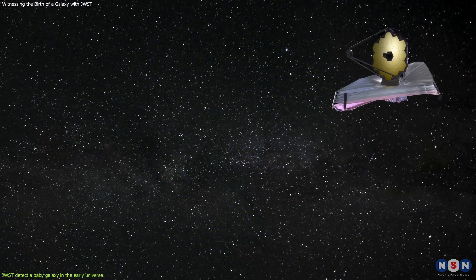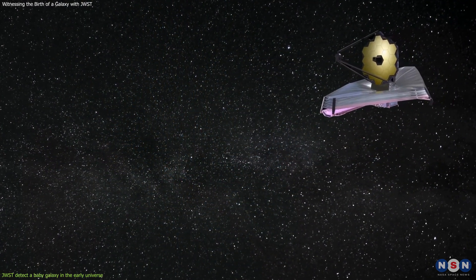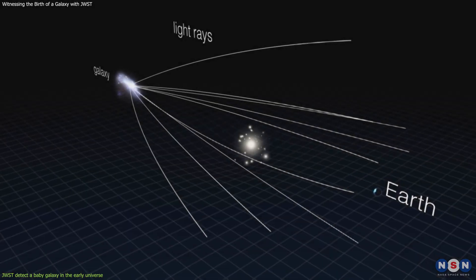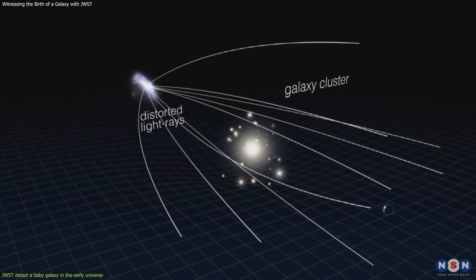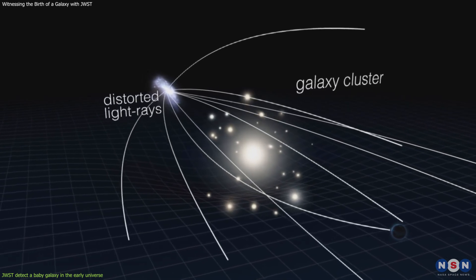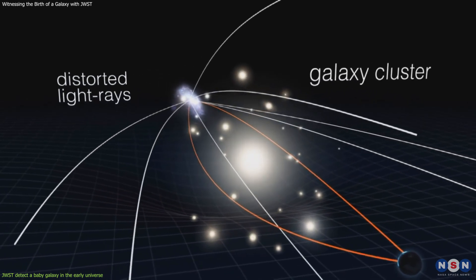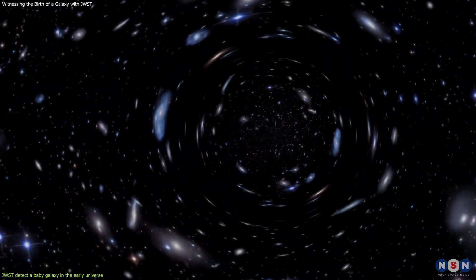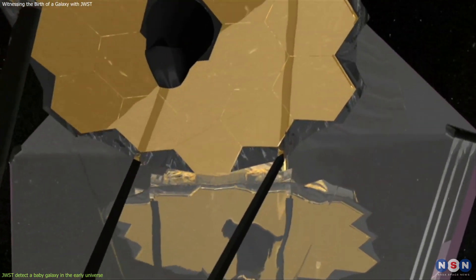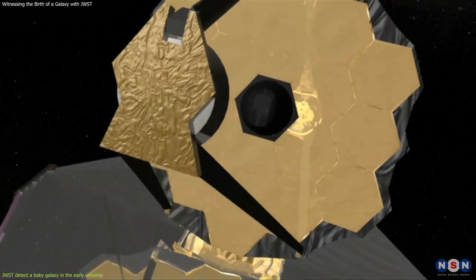To do this, the JWST uses a technique called gravitational lensing, which is a phenomenon where the gravity of a massive object bends the light from a distant object behind it, magnifying and distorting its image. This allows Webb to see objects that would otherwise be too faint or small to detect.